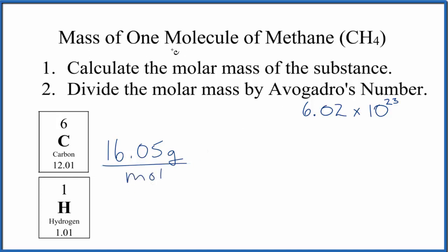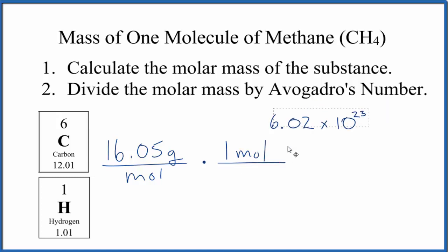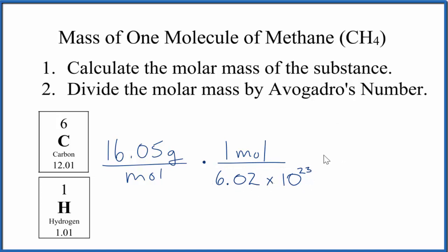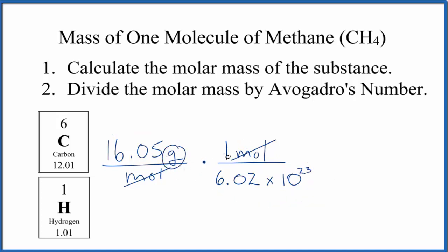To figure out the mass of one single molecule of methane, CH₄, we're going to multiply by a conversion factor, because we know that one mole is Avogadro's number of particles — atoms, molecules, ions. When we multiply these two numbers together, moles cancels from top and bottom, leaving us with grams. All we're doing is taking the molar mass and dividing it by Avogadro's number, and this way we know we have the correct units.